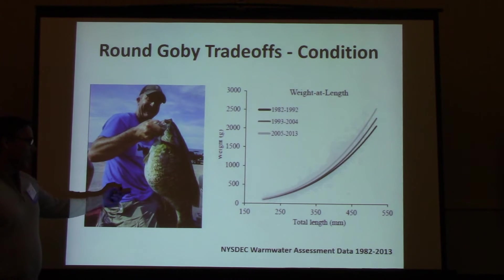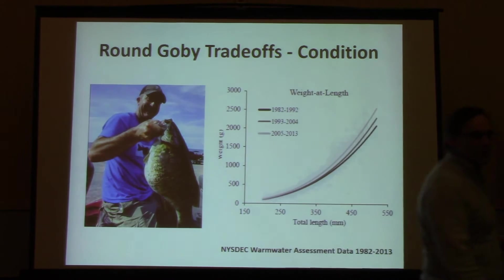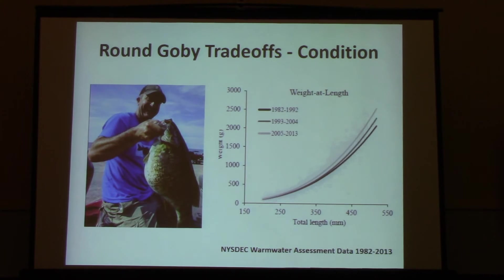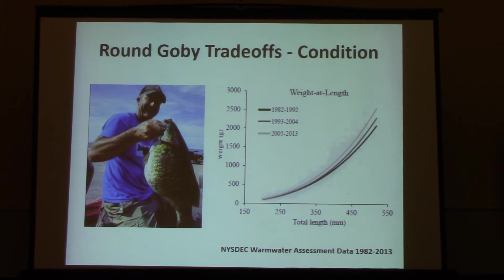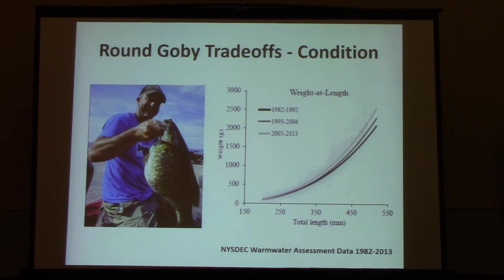This is the kind of outcome you can get — you can stick this in the pro column pretty quickly. This ties into the Lake Erie record smallmouth bass. It's a big deal — you want the biggest fish to come from your water body. It's an eight-pound, four-ounce smallmouth bass, and I'd be willing to guess it's eaten some round gobies in its lifetime to get that big.